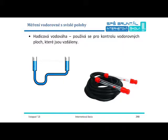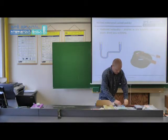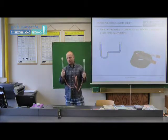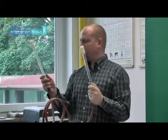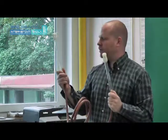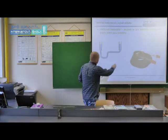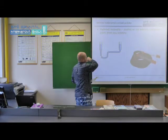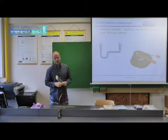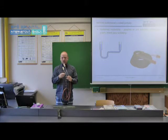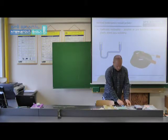The hose spirit level serves for checking, as we said, distant surfaces. It's shown here and here. Physically it's a system with two graduated containers connected by a hose, with scales on these containers. In this case in centimeters, we check distant surfaces by placing one tube on one surface, the other tube on another surface, and the liquid level always settles at horizontal position as follows from the principle of communicating vessels. We simply read the values on both graduated containers and determine the difference between these positions.